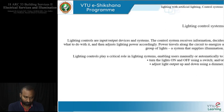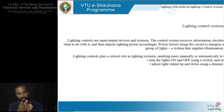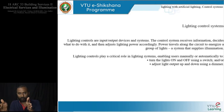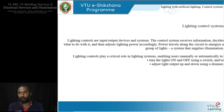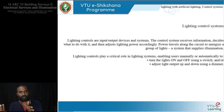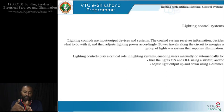The lighting control plays a critical role in lighting systems, enabling users — manually or automatically — to switch the lights on and off, or adjust the light output up and down using a dimmer. Equate this to the regulator next to your fan switch, which varies the fan speed. The same fan regulator can adjust the brightness of a light — it is the amount of electricity that reaches the light. So it is about turning on and off, and also adjusting light output up and down using a dimmer.